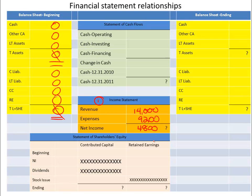The reason we have to do the income statement first is that net income flows into the statement of shareholders' equity. It will be included in the computation of what earnings were retained in the business — in other words, retained earnings. The statement of shareholders' equity is what we do second, and retained earnings is $4,800.